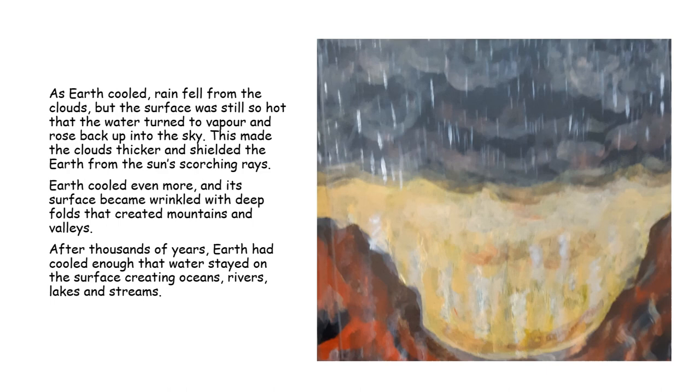As Earth cooled, rain fell from the clouds, but the surface was still so hot that the water turned to vapor and rose back up into the sky. This made the clouds thicker and shielded the Earth from the sun's scorching rays. Earth cooled even more, and its surface became wrinkled with deep folds that created mountains and valleys. After thousands of years, Earth had cooled enough that water stayed on the surface, creating oceans, rivers, lakes, and streams.